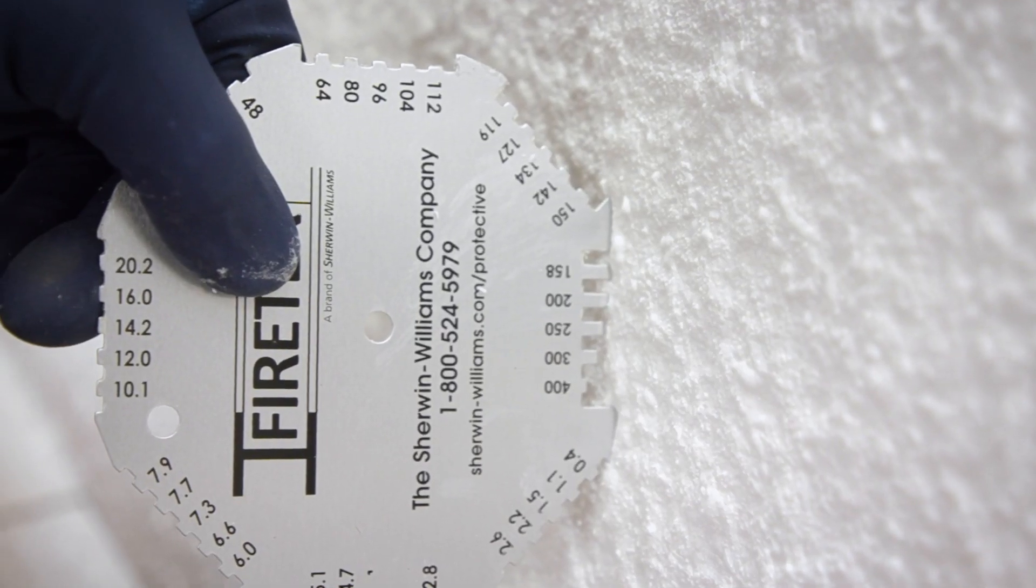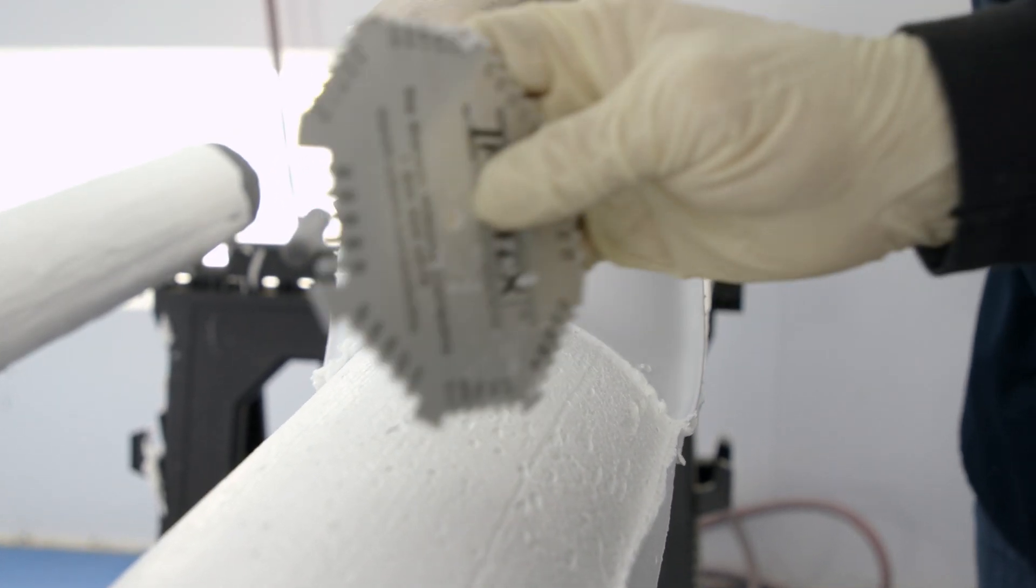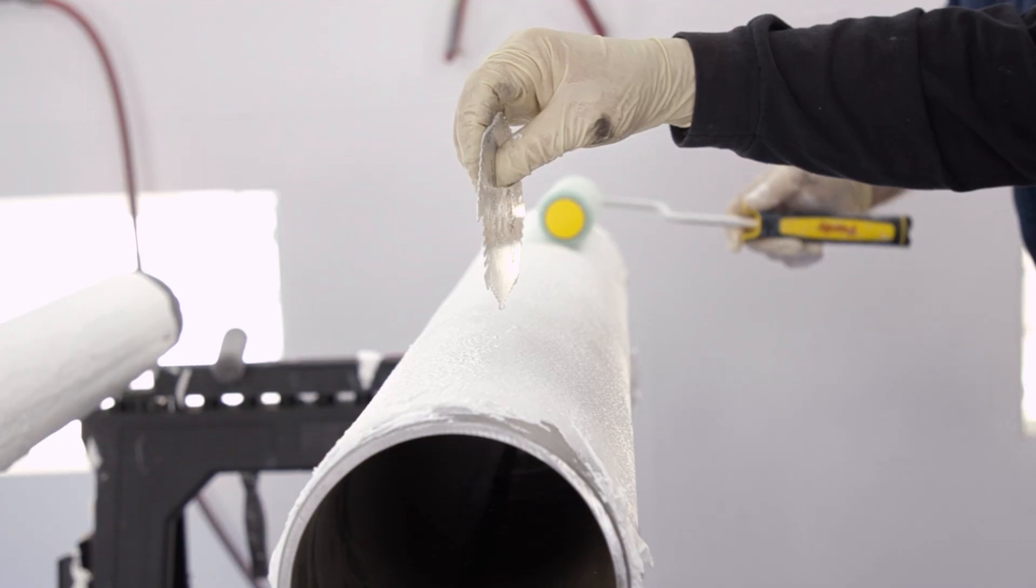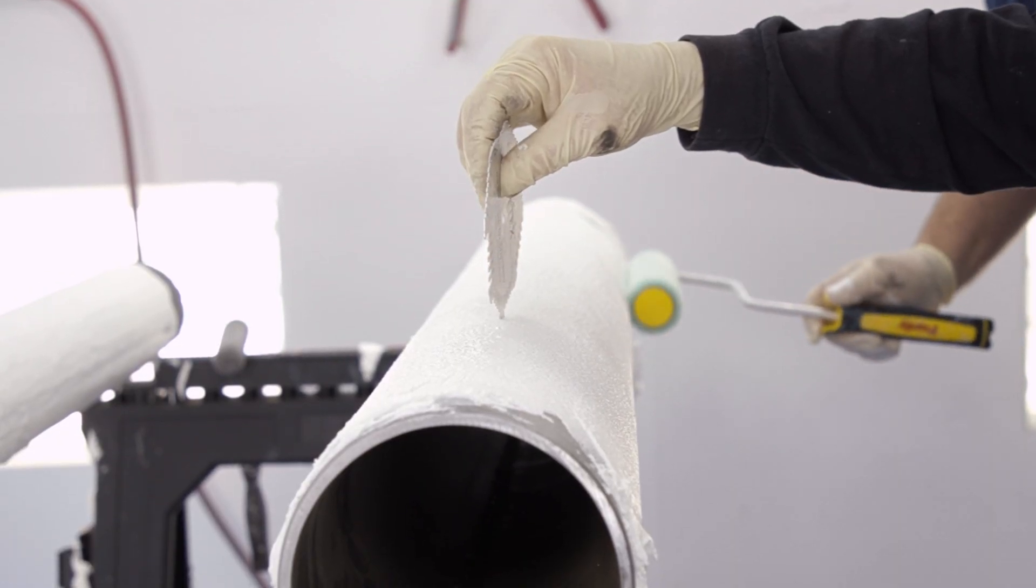Check your wet film thickness with a mil gauge to ensure ideal results. It is critical with this product when applying proper millage to measure from the average film thickness, not the peaks or valleys.